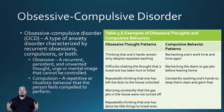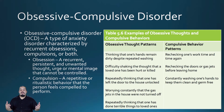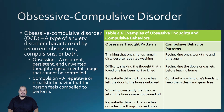The person with OCD is fully aware of the thoughts and behaviors they are performing. A key difference between a compulsion and a habit is that a habit is easy to stop if consciously noticed, whereas a compulsion is very difficult to stop even if you know you are doing it and even if it is destructive.